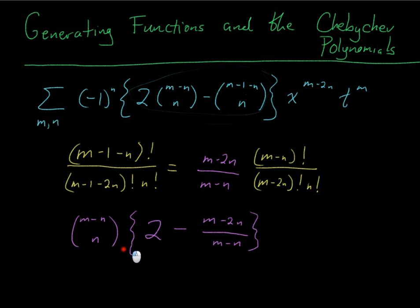So now I've got 2 for this first one minus (m minus 2n) over (m minus n). Of course, my 2, I'm going to put him over a common denominator. So I want him over (m minus n). So this would be (2m minus 2n).